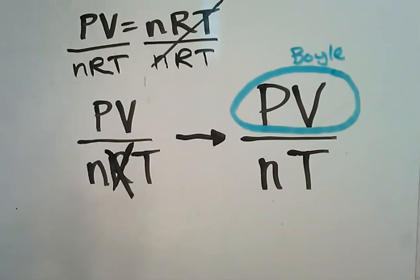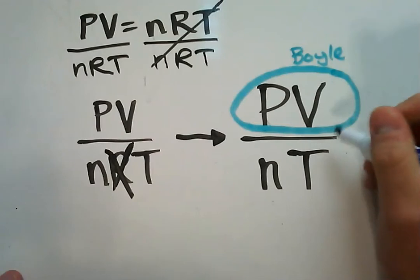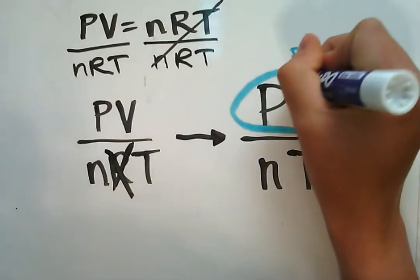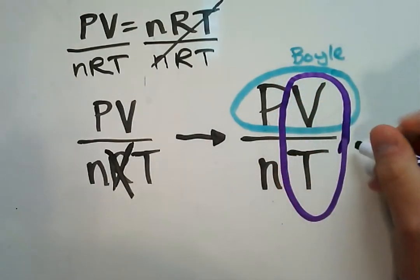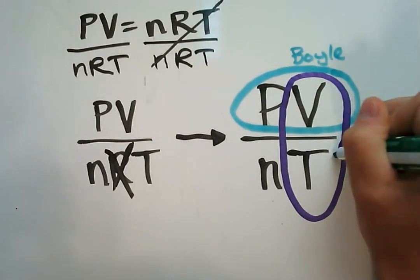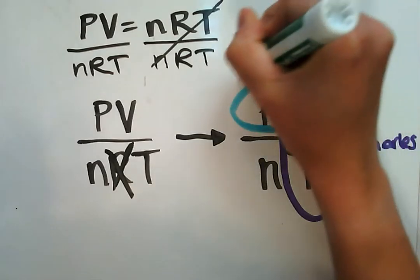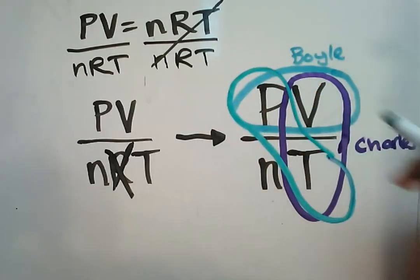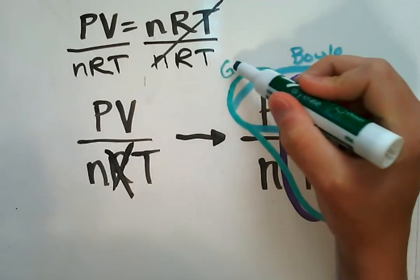So Boyle's law we have PV equals PV. Charles's law relates volume and temperature. Third we have Gay-Lussac, which relates pressure and temperature, so we're going to do GL for Gay-Lussac's law.